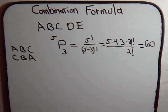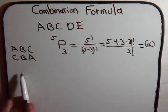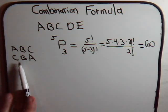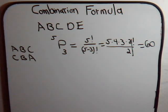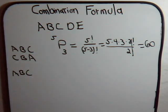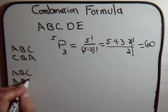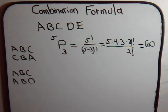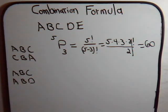Now suppose the criteria from one group to the next is not the order of the letters, but whether each group has at least one letter that's different from the other group. So groups with the same letters would be considered part of the same group. For example, if we had ABC and ABD, these groups would be considered different because this set has at least one letter that's different from the other set. So these are not called permutations — these are called combinations.